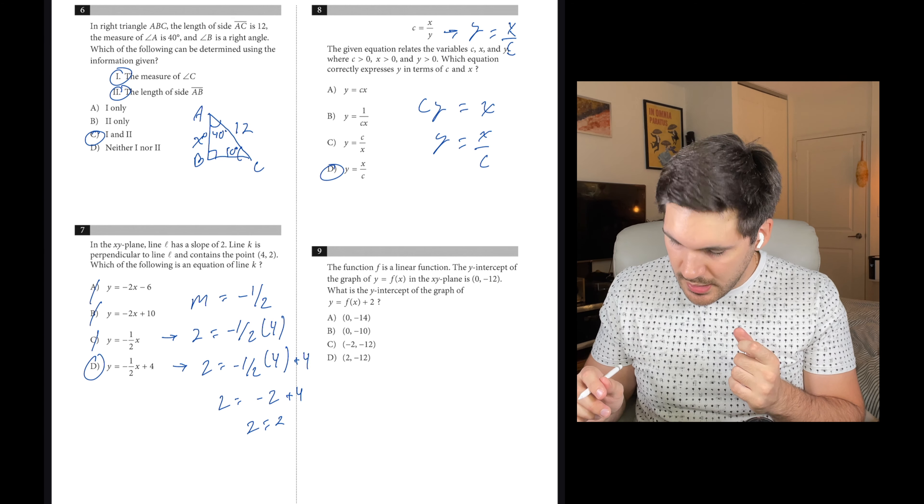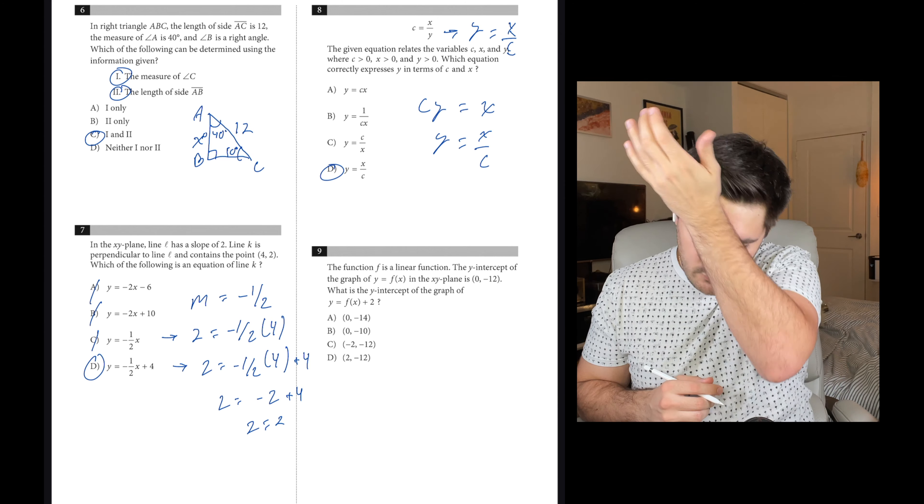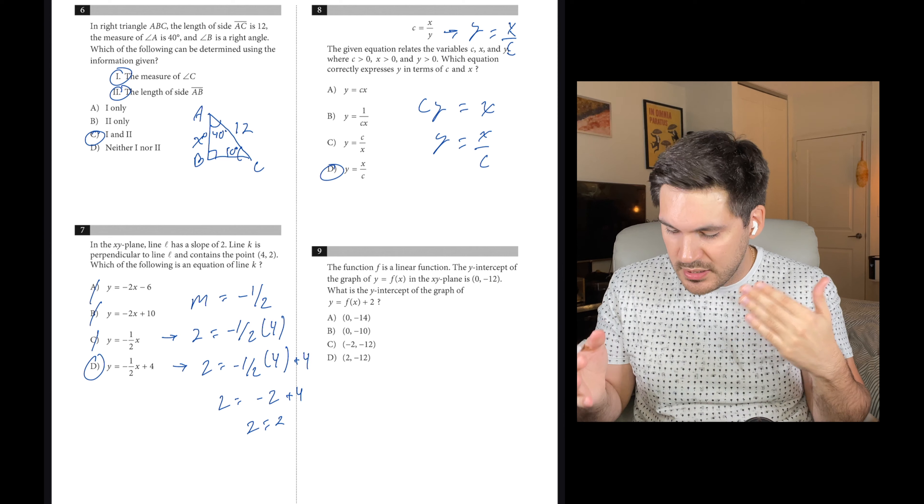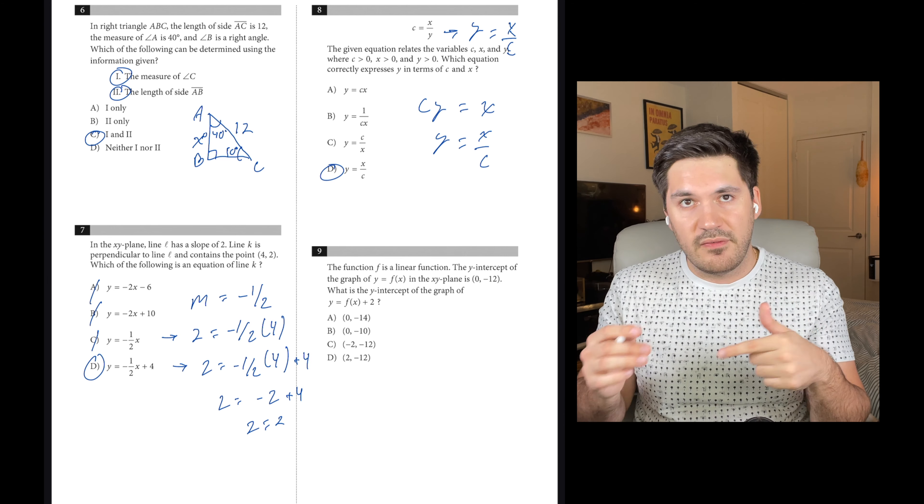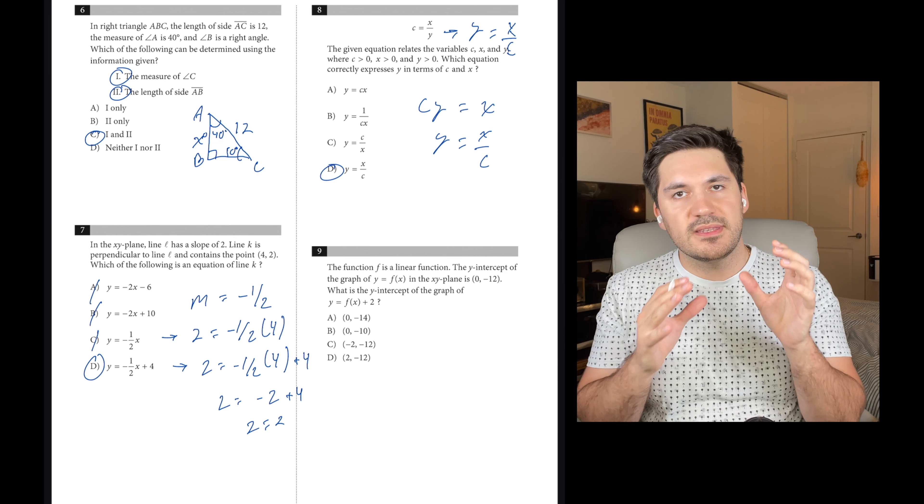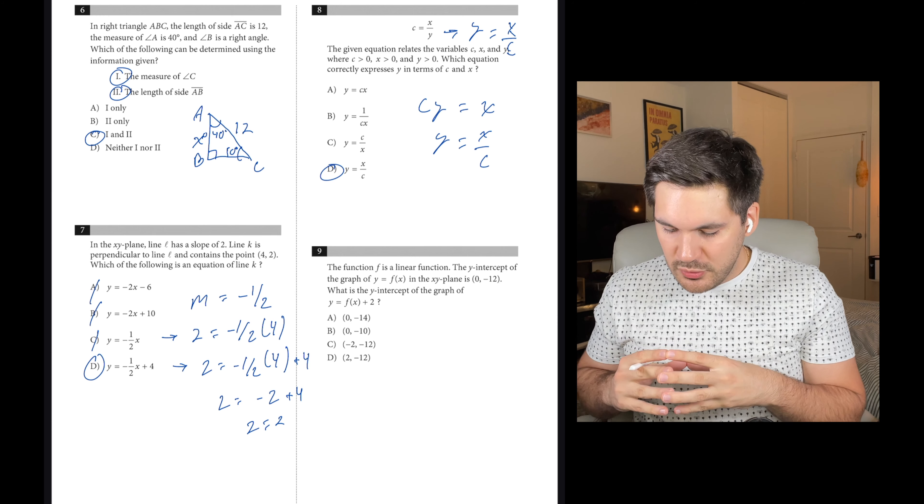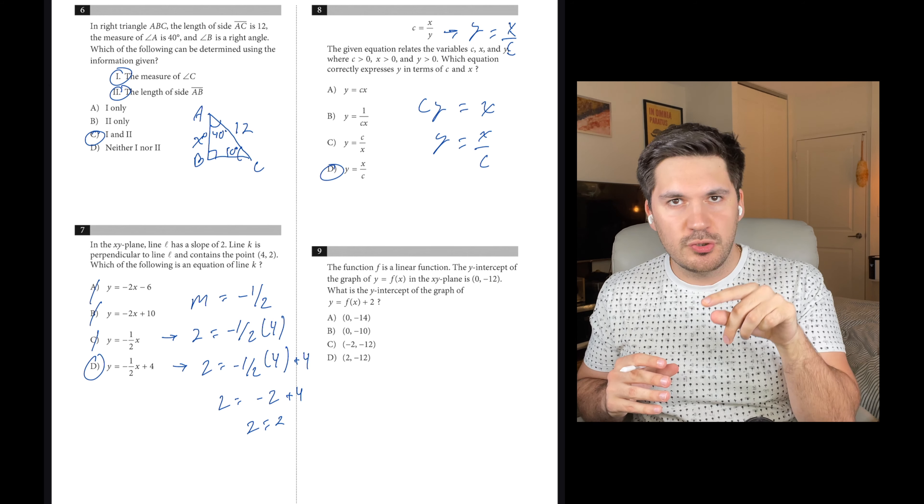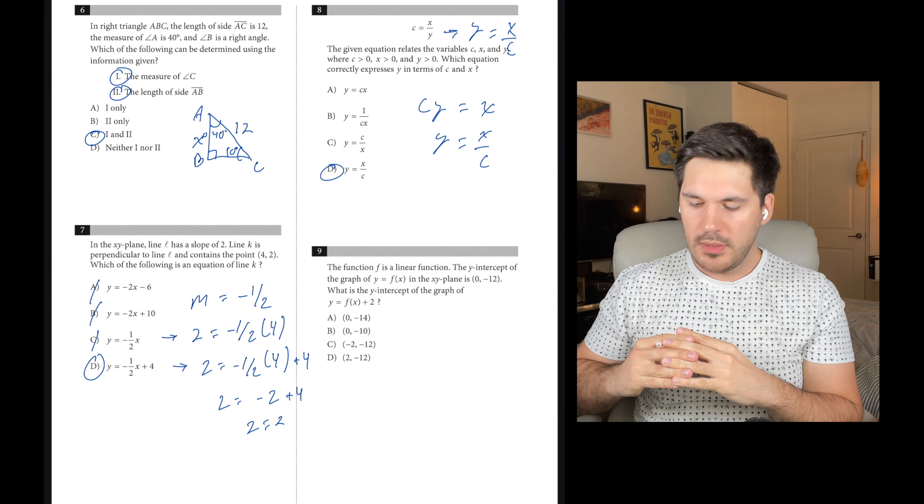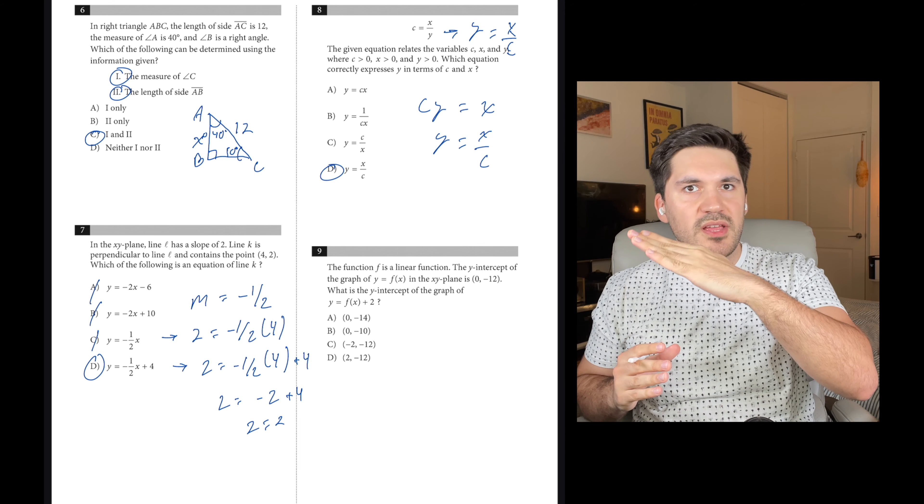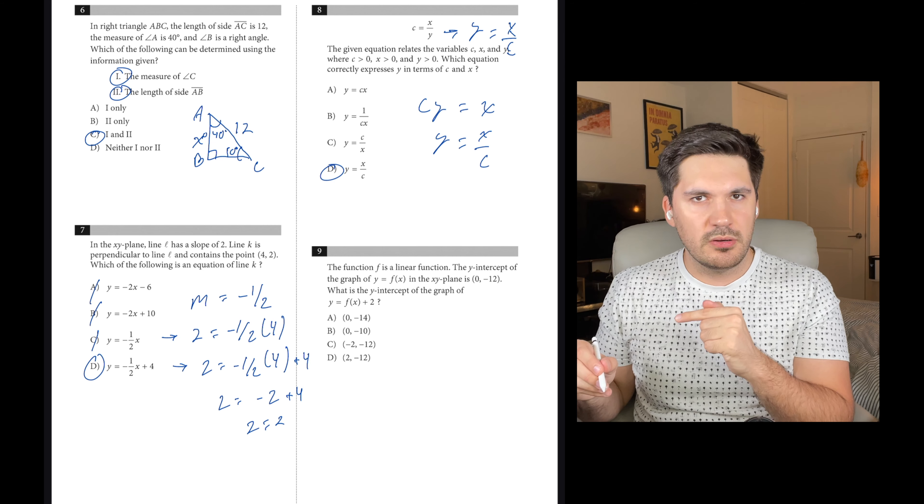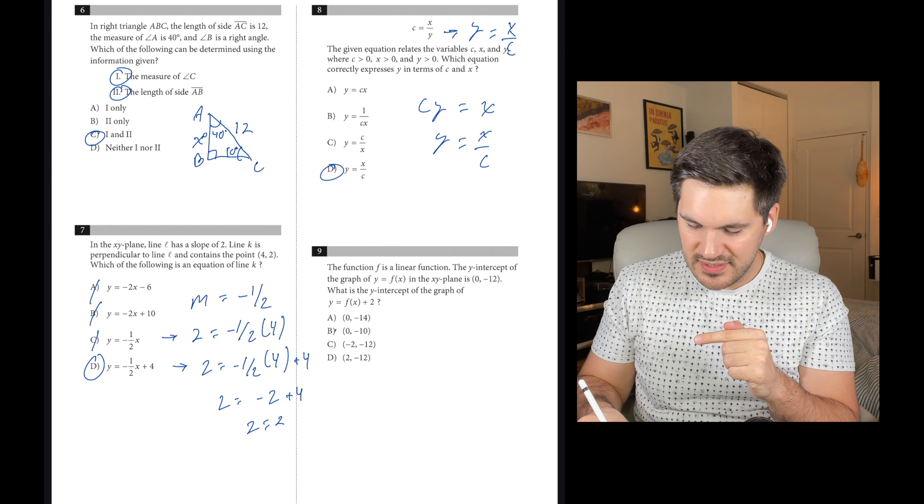Number nine, the function F is a linear function. The Y-intercept of the graph Y equals F of X is (0, -12). What is the Y-intercept of the graph Y equals F of X plus 2? By just adding that plus 2 after the F of X, we're just shifting the entire graph up 2. Since this is a linear function, we know that just shifts the whole thing up 2. So if the Y-intercept is (0, -12), it's going to be 2 higher, which is (0, -10). B.